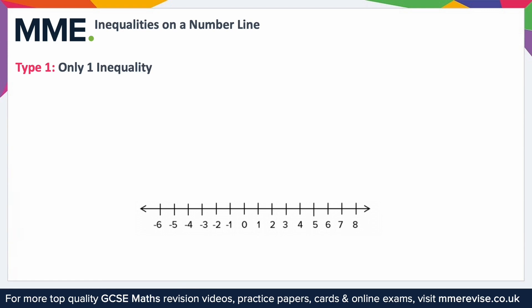To represent an inequality on a number line, let's take the example x is greater than or equal to minus 5. First, find minus 5 on the number line. Then draw a circle above that point and decide which direction it goes — since we want numbers greater than minus 5, we go towards the positive numbers. Because it can also be equal to minus 5, we fill in the circle.